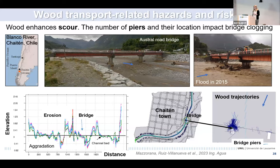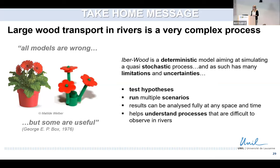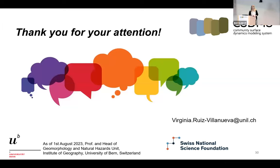To finish, the model is a simplification — we are trying to use a deterministic model to reproduce a quasi-stochastic process, so there are still many limitations and uncertainties. But we can use the model to test hypotheses, run multiple scenarios, and understand processes that are very difficult to observe in rivers. Thank you for your attention.